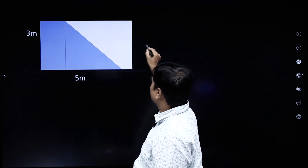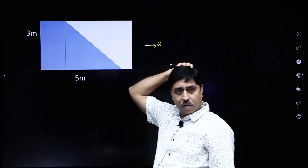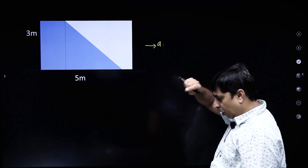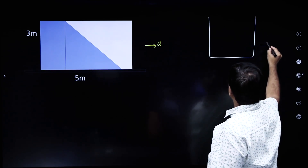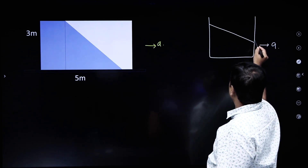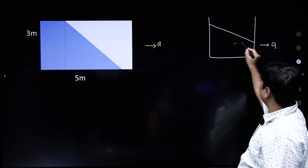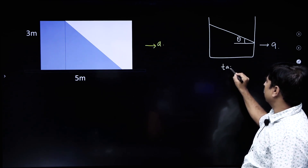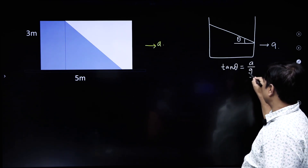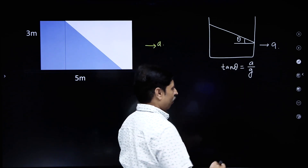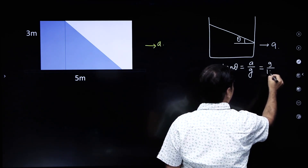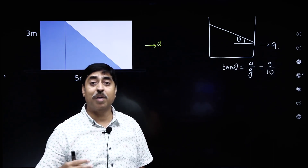The shape of the entire water volume inside the tank may become like this. All of you know that if water is filled in a tank and the tank is given an acceleration a, the water surface gets inclined with the horizontal and the inclination angle is a by g. In this particular question the value of a is 9, so tan theta will become 9 by 10.